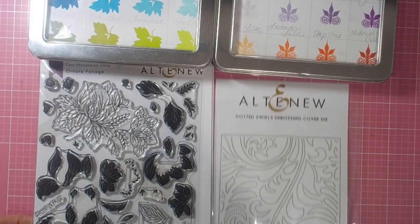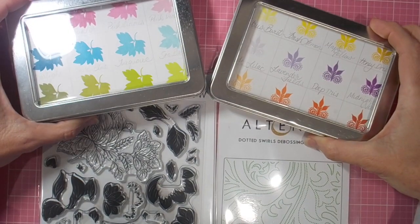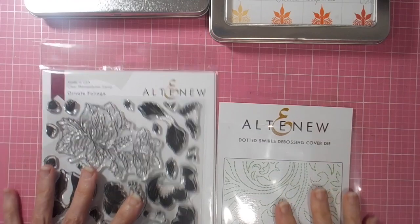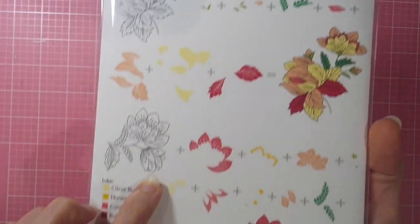Hi there, it's Linda here. Thanks so much for joining me today as I play with some of my Altenew goodies. I'll be using lots of Altenew inks today and this beautiful ornate foliage stamp set. It's a layering flower.